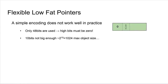The simple low-fat pointer representation — literally including the size field verbatim in the bit representation of the pointer — does not work well in practice. On x86-64, pointers are really 48 bits, so the upper 16 bits must be zero. And using, say, 10 bits for the size is not enough — you can only represent a max object size of 2^10. If you try to increase the number of bits used for size, you very quickly run out of bits available to actually store object addresses.